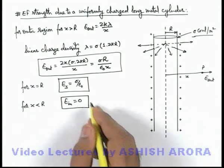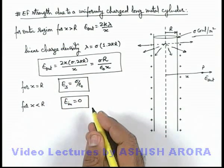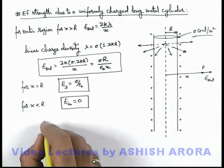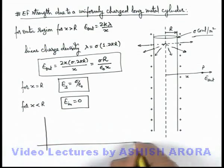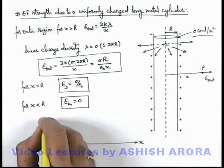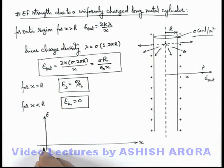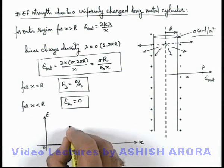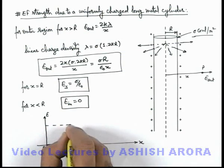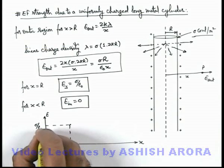And the same results are also applicable for a hollow cylinder. And if we plot a variation curve of electric field with distance then we can say, from x equal to zero to its surface electric field remains zero. And on surface its value is sigma by epsilon not